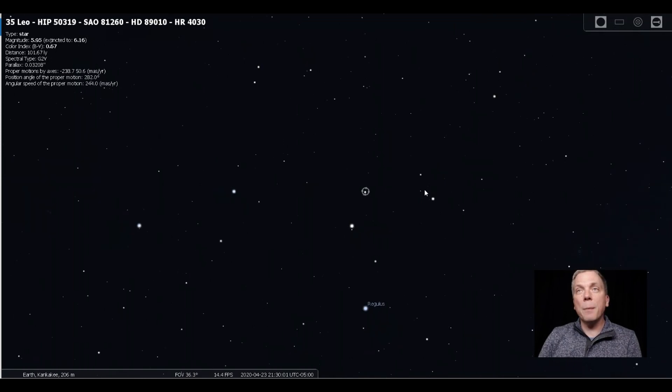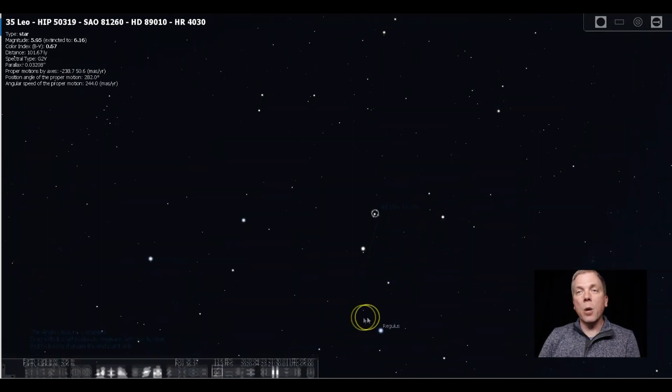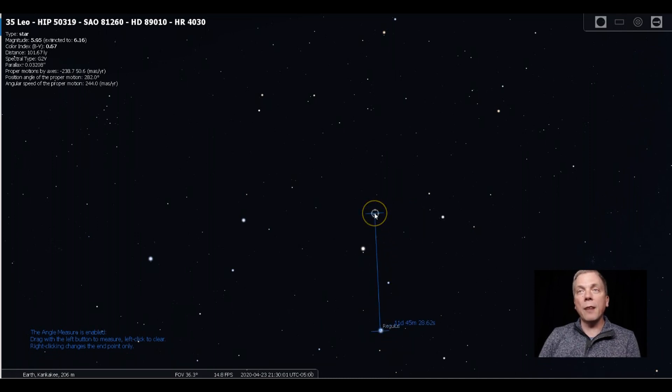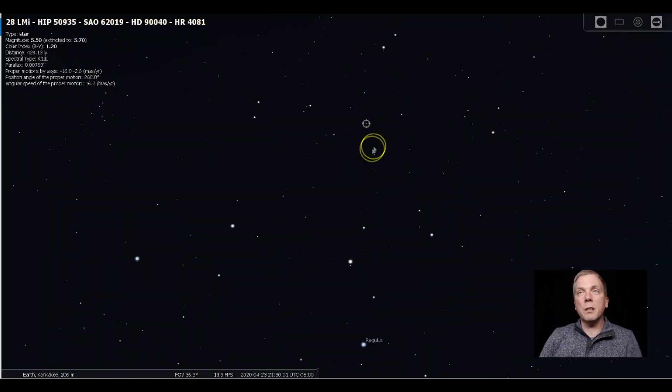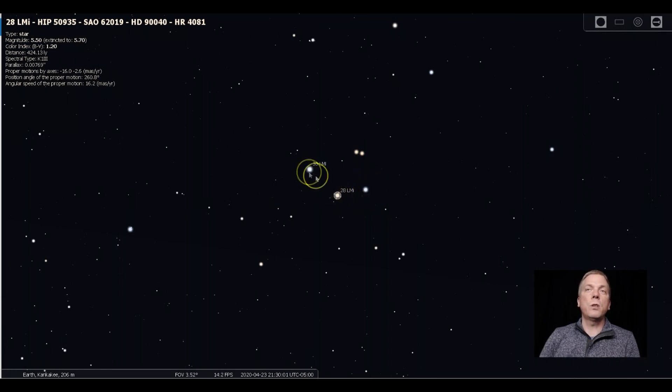What we're going to do to get up into Leo Minor is we're going to follow a line going from Regulus through 35 like this. Now you can see that's a little over 11 degrees. You're going to go a similar distance, the same direction like that. So you're just going to make two jumps and just get a feel for how far that is when you go through there. But what you will find when you get up into this area is there's going to be a little triplet of stars, and you should be able to find those without any problem using binoculars or a finder scope.